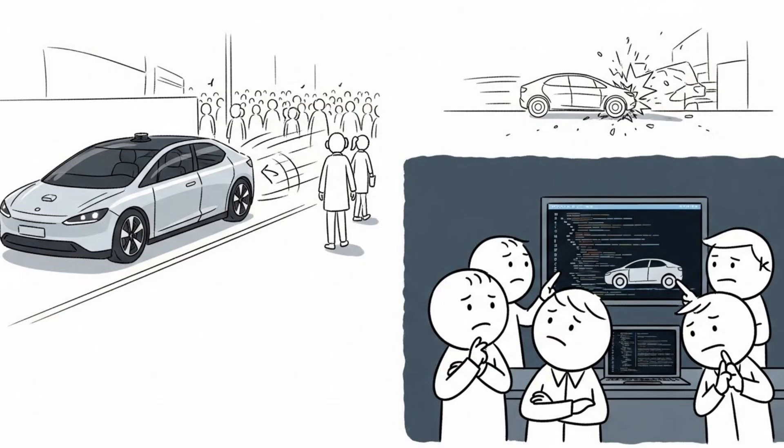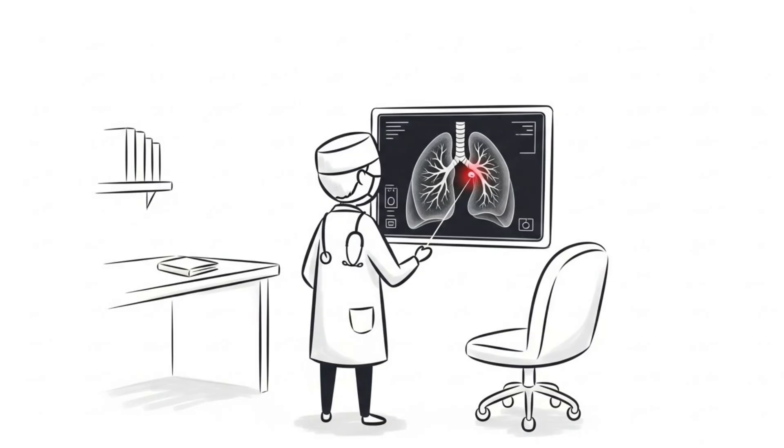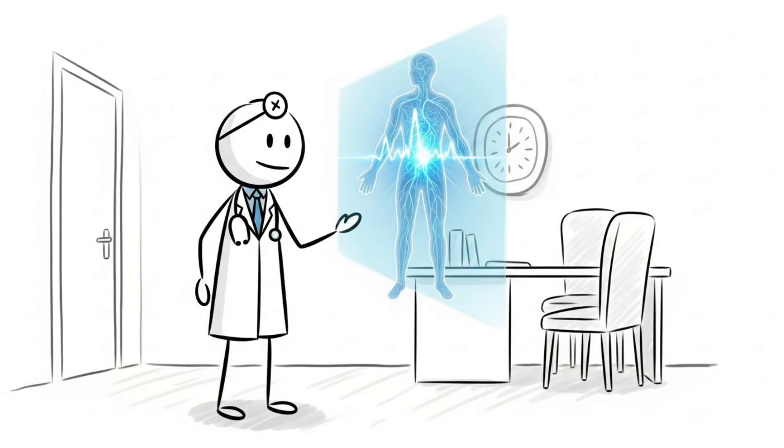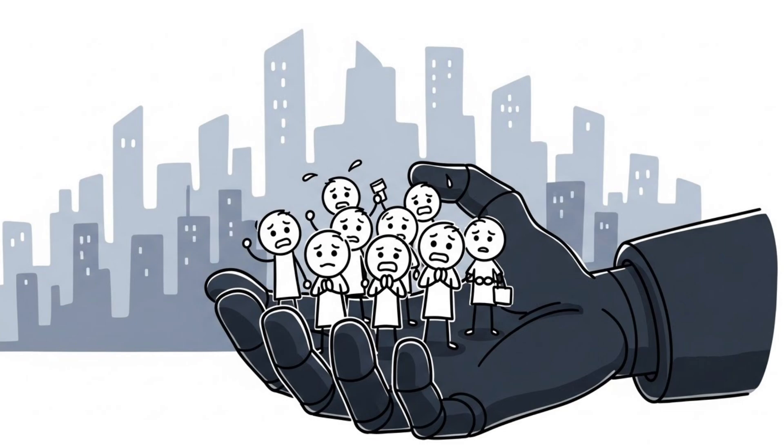If a self-driving car swerves into a crowd, engineers can't look at the code to understand its exact thought process. AI can detect tumors human doctors miss, but it can't explain why. It might have seen something in the scan, made a connection we can't see, and delivered a diagnosis that turns out to be correct. We are trusting our lives to systems we've built, but can't audit.